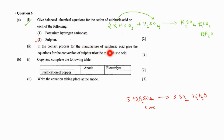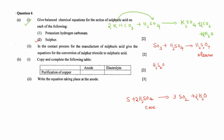In the contact process for the manufacturing of sulfuric acid, give the equations for the conversion of sulfur trioxide to sulfuric acid. We won't add water directly. Instead, we add concentrated sulfuric acid to sulfur trioxide, and the product obtained is H2S2O7, also known as pyrosulfuric acid or oleum. From oleum, sulfuric acid is obtained by adding water — adding one molecule of water gives exactly two molecules of sulfuric acid.